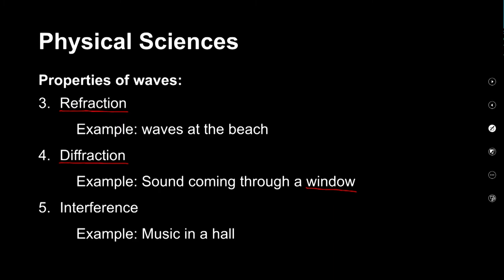The last wave property we've looked at is interference. Interference is not one that we see very commonly in our everyday lives unless you know a little bit about the acoustics of music and playing it in a large venue like a hall or concert venue. These large halls and concert venues are built so that the sound waves constructively interfere at all the different places inside the hall, ensuring the sound sounds as if you were standing right at the front of the stage no matter where you are in the room.